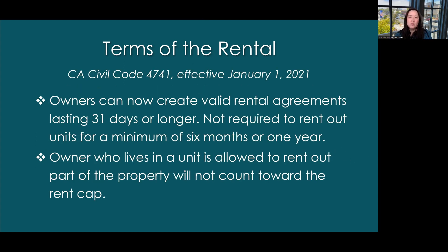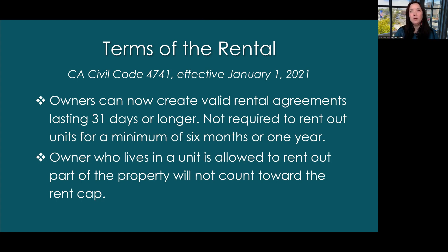Going back to California Civil Code 4741 from 2021, there are some adjustments that have been made. Owners can now create valid rental agreements lasting 31 days or longer, so if you see in a CC&R that there is a six-month or one-year minimum, they can no longer require that — it just has to be 31 days or more. Also, an owner who lives in a unit is allowed to rent out part of their property, such as a second bedroom as a long-term rental, and that will not count toward the rent cap.